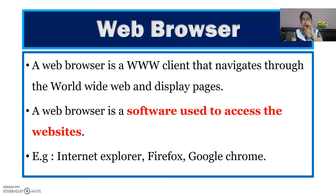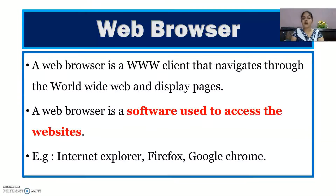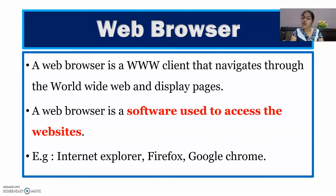Next is web browser. A web browser is software which is used to access a website. Whenever we open any website, such as google.com or the CBSE website, we need to open a web browser first. Examples of web browsers are Internet Explorer, Firefox, Google Chrome, Netscape Navigator, and Apple Safari. It is software used to access any website on your computer system.